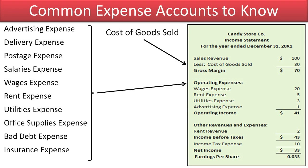Next, the expenses that are used to support the company's process and operations of selling goods and services to customers — such as salaries and wages, rent, utilities, advertising, insurance, postage, etc. — are classified as operating expenses and are deducted from gross margin to arrive at operating income. Operating income is the result of the company's core operations and its main business, which the company hopes to improve upon in the future.